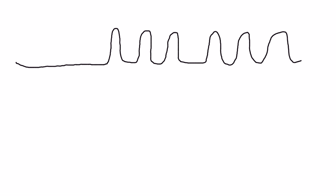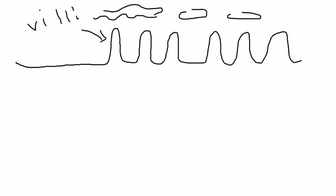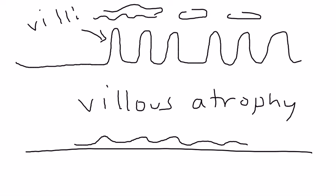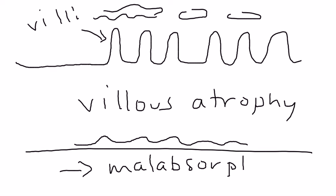There are these little villi — the things drawn here — which are responsible for aiding in absorption. You can think of them like arms or hands that grab the food. In celiac disease, these villi flatten out. This is called villus atrophy, and it happens because of the sensitivity to gluten.